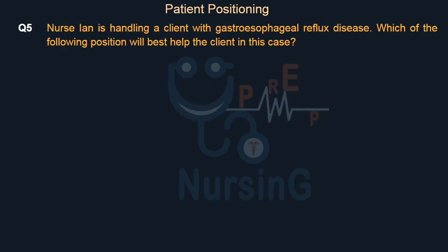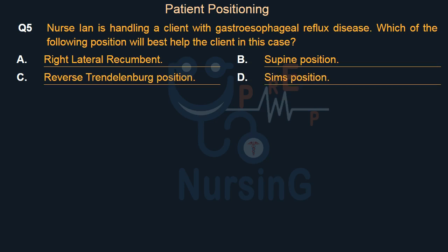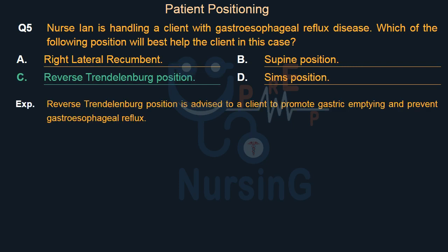Nurse Ian is handling a client with gastroesophageal reflux disease. Which of the following positions will best help the client in this case? Option A, right lateral recumbent; Option B, supine position; Option C, reverse Trendelenburg position; Option D, Sims position. The right answer is Option C, reverse Trendelenburg position. Reverse Trendelenburg position is advised to promote gastric emptying and prevent gastroesophageal reflux.